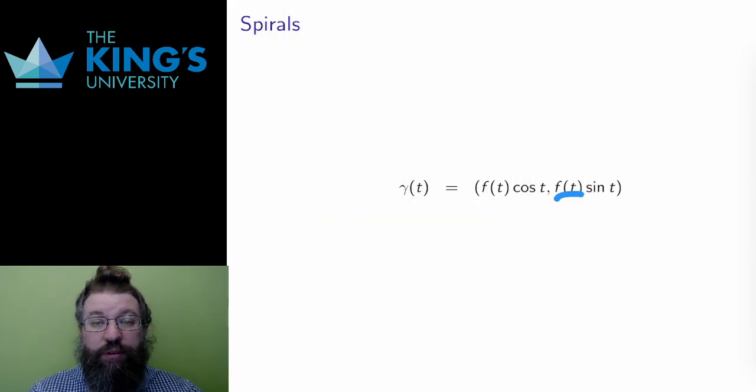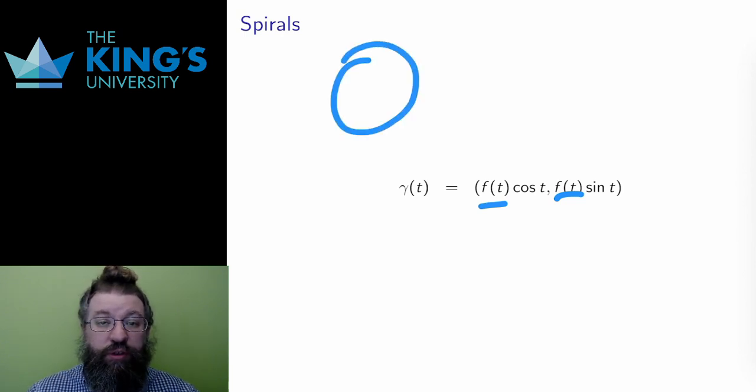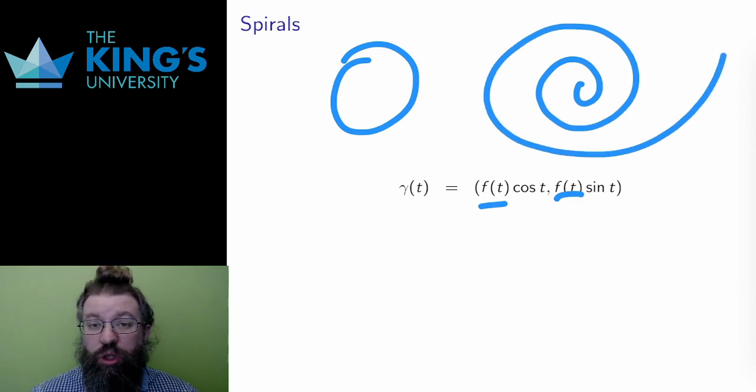One major adjustment to the circle is adding the same function in front of each. This changes the radius of the circle. If f is an increasing or decreasing function, then the radius will either be increasing or decreasing, and the resulting shape will be a spiral.